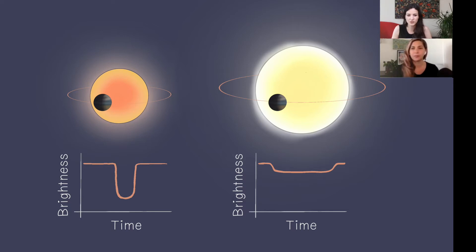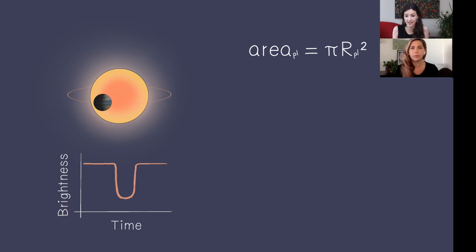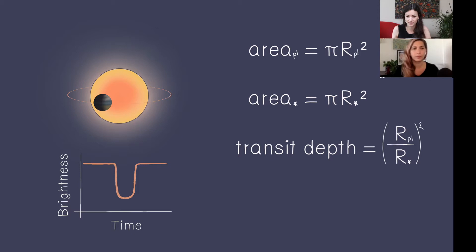We can look at this in terms of equations. The fraction of light being blocked means we need to know the area of the planet — we see the planet as a disk, so the area is pi times the radius of the planet squared. We also need the area of the star, which is pi times the radius of the star squared. The transit depth is simply one divided by the other — the area of the planet divided by the area of the star — and the pi's cancel out, leaving us with the radius of the planet divided by the radius of the star, both squared.